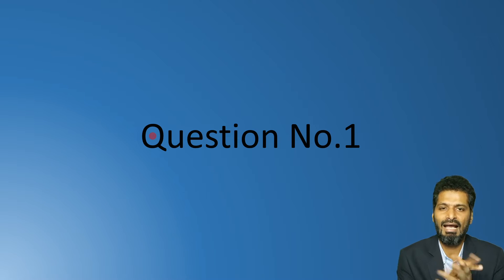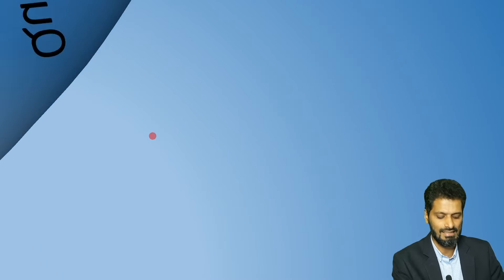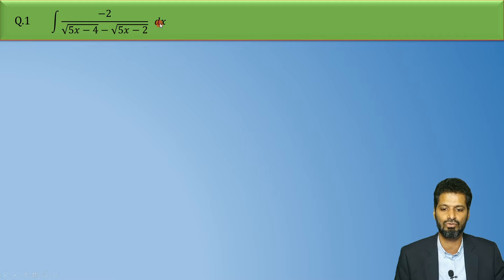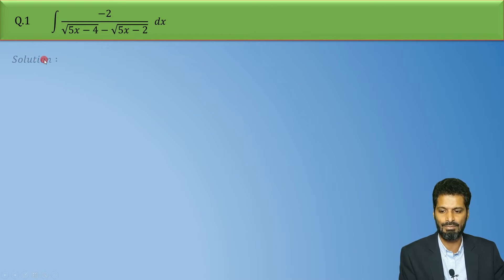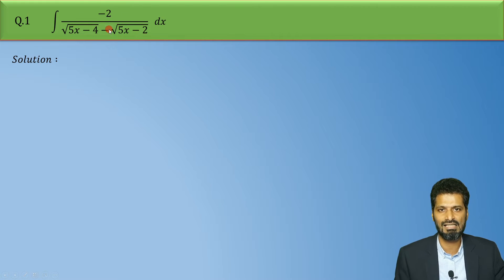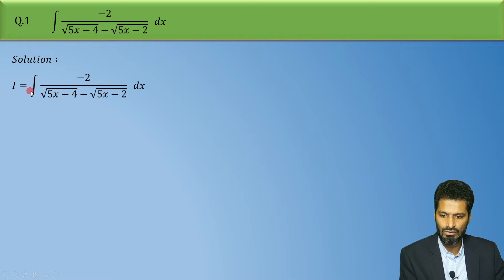Hello everyone, welcome back. Let's begin with the new question. The question says: integrate minus 2 divided by root of (5x minus 4) minus root of (5x minus 2), dx. Very easy question, so without wasting any time, let's quickly begin with the solution. First of all, whatever integral is given, let us consider that integral as I. So we have I equals to the same integral.